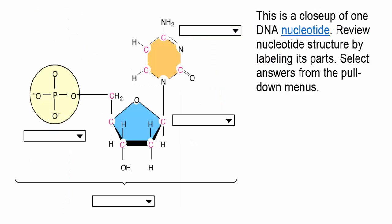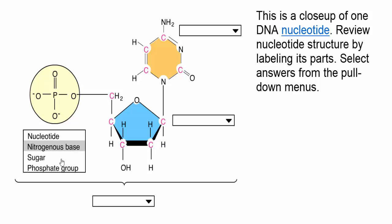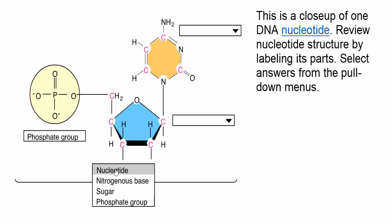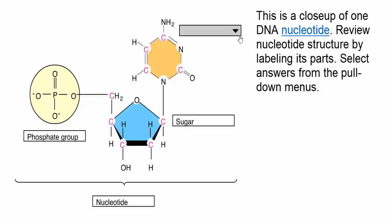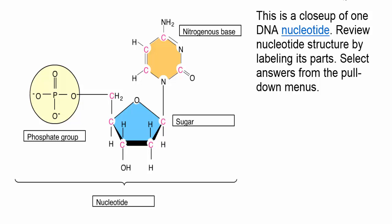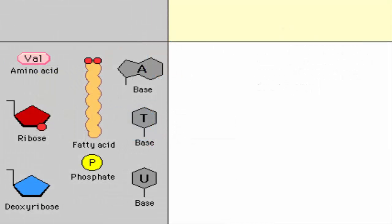This is a close-up of one DNA nucleotide. Review nucleotide structure by labeling its parts. Select answers from the pull-down menus. Use the biological molecular components common in a typical cell to assemble a DNA nucleotide in the empty box.